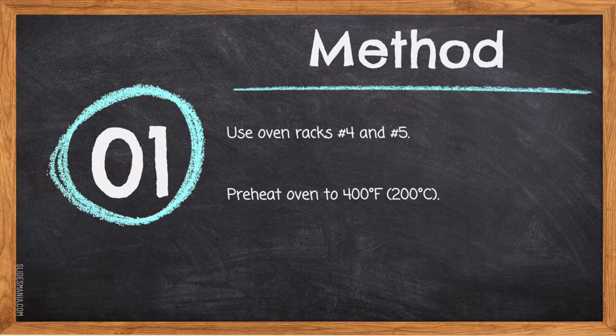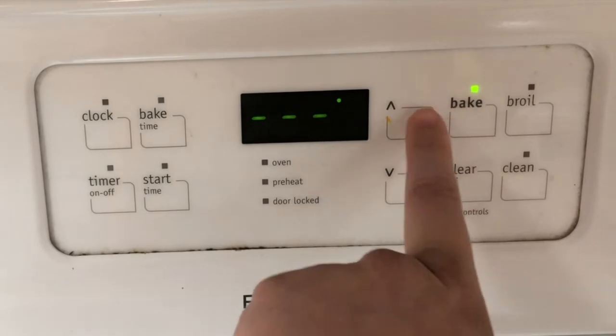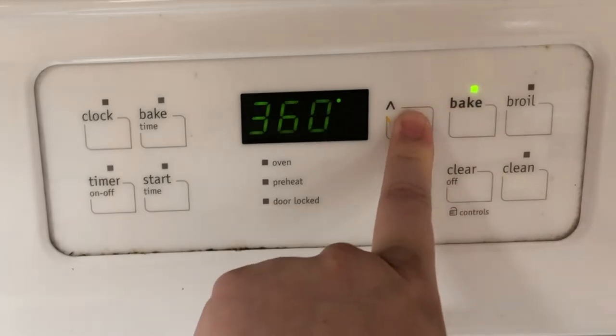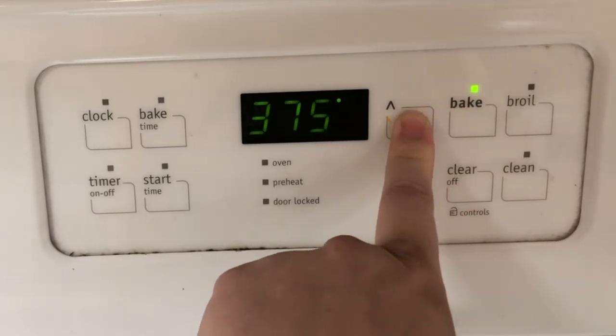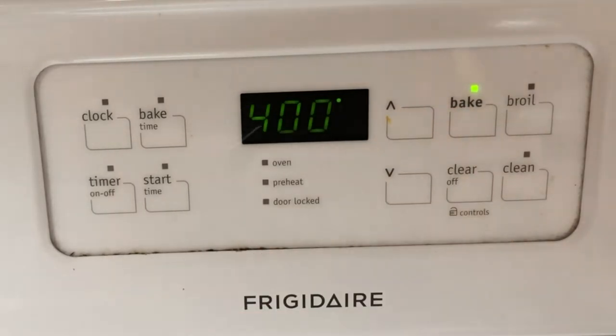Step one: use oven racks number four and number five. Pre-heat oven to 400 degrees Fahrenheit, 200 degrees Celsius. To turn on the oven, press the bake button and then use the up arrow to select the desired temperature.